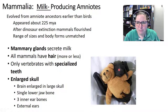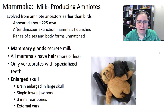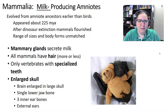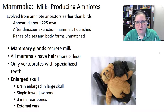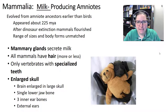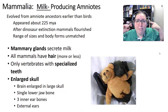Mammals are milk-producing amniotes. Bats are mammals — they fit all the characteristics. Mammals evolved from amniote ancestors about 225 million years ago and flourished after the dinosaur extinction. They have mammary glands that secrete milk, hair (in varying amounts), specialized teeth unique among vertebrates, an enlarged skull housing an enlarged brain, a single lower jaw with three inner ear bones, and external ears.